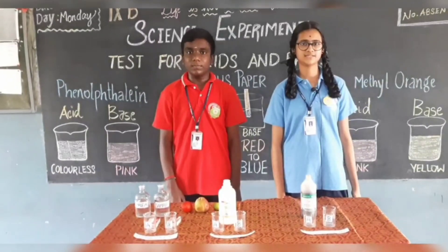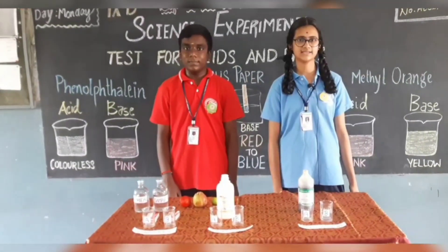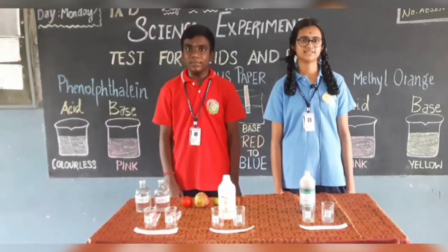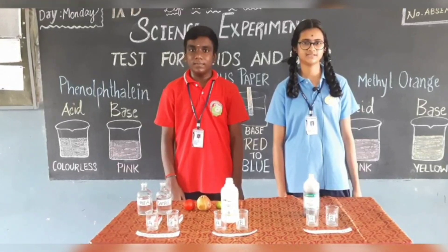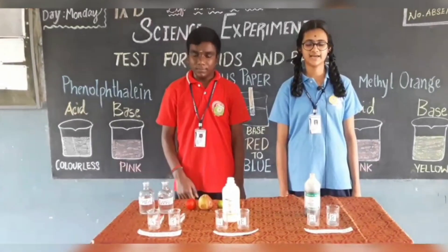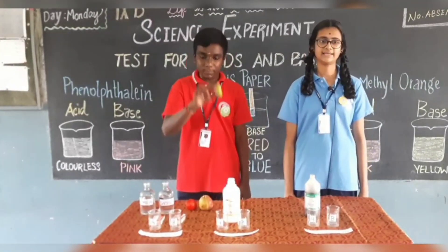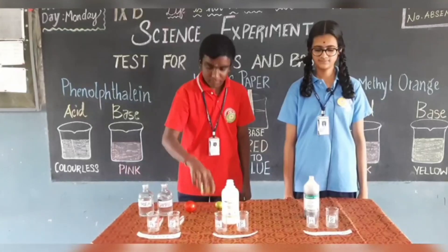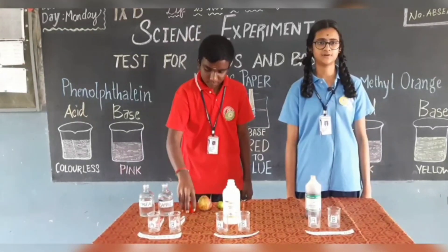The chemical compounds that have sour taste are generally called as acids. All acids contain one or more replaceable hydrogen atoms. For example, citric acid from lemon, malic acid from apple, and oxalic acid from tomato.